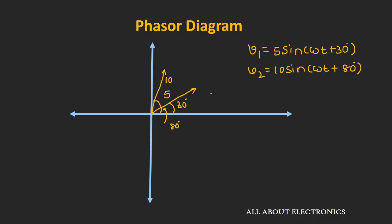Sometimes a Phasor is also represented by the RMS value of the sinusoidal signal. The reason is that most measurements carried out by ammeters and voltmeters are in terms of RMS values. So sometimes you will find that Phasors are represented by RMS values instead of the peak value. In this video, however, we will consider the peak values of these sinusoidal signals.